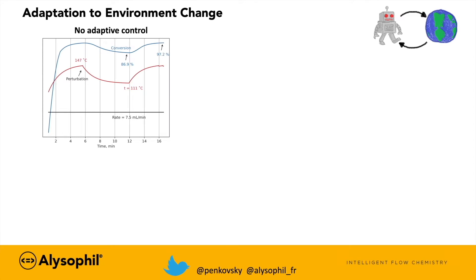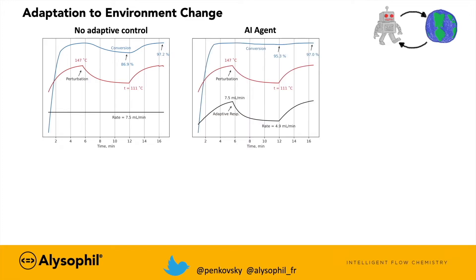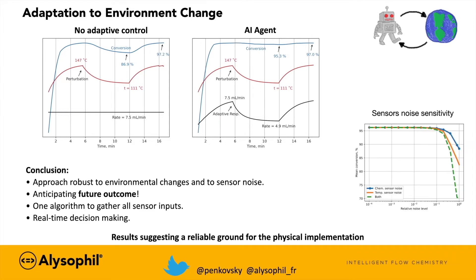First we fix the desired thermostat temperature and flow rate with no adaptive control; therefore, as the reactor cools down, the reaction conversion also drops. Next we inspect how the adaptive agent responds to the change in environment. When the reactor cools down, it adapts the flow rate and the conversion remains intact. We have also verified that the agent is extremely robust to sensor noise. We conclude that the approach is robust to environmental changes and sensor noise. Interestingly, the agent learns to anticipate the future conversion outcome with respect to the residence time. We have a single algorithm to gather all sensor inputs and react in real time. Our results suggest a reliable ground for physical implementation.